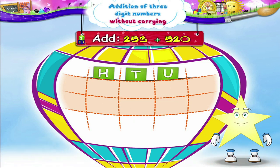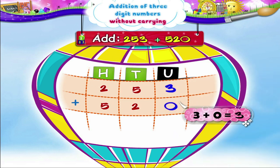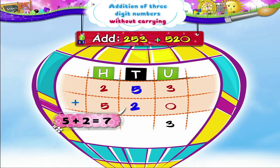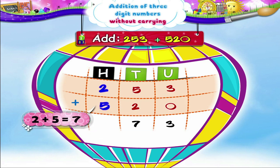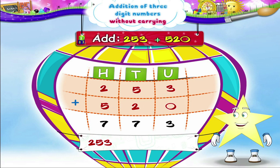Fill in the boxes in the given example. 253 plus 520. You solve this one, Starry! Yes! 3 units plus 0 units is equal to 3 units. 5 tens plus 2 tens is equal to 7 tens. 2 hundreds plus 5 hundreds is equal to 7 hundreds. So, 253 plus 520 equals 773.